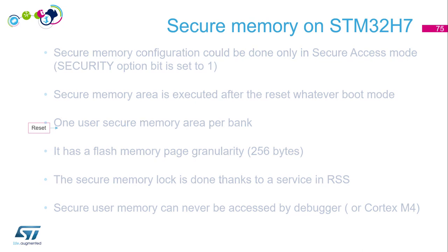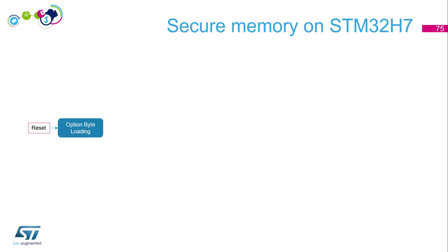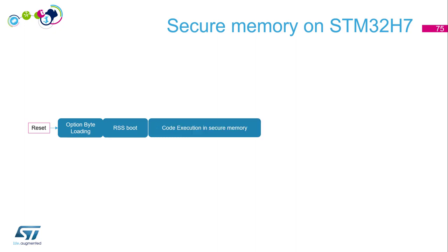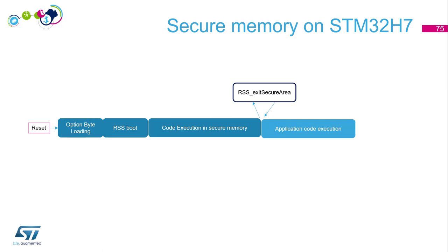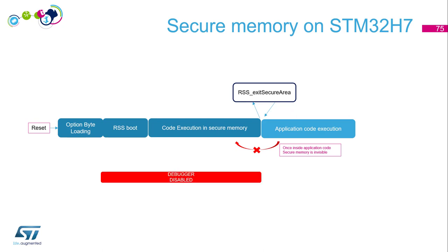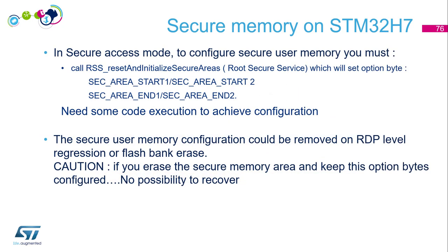The boot sequence on the H7 is similar to the G0: on reset, option bytes are loaded, then RSS boot runs — details are in the reference manual. Code executes in the secure memory, then you call the RSS 'exit secure area' service, and execution jumps to the application code. The secure memory has completely disappeared from the debugger's point of view. The debugger is disabled during all of the secure memory execution and becomes re-enabled afterward. Caution: if you configure the option bytes but have nothing in the secure memory area, you will never jump to the application code and the debugger will remain disabled.